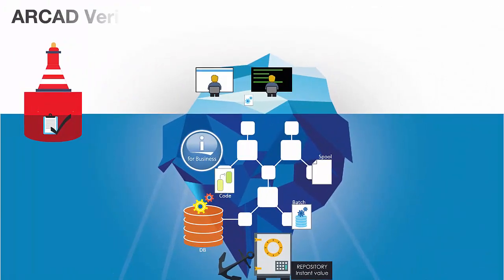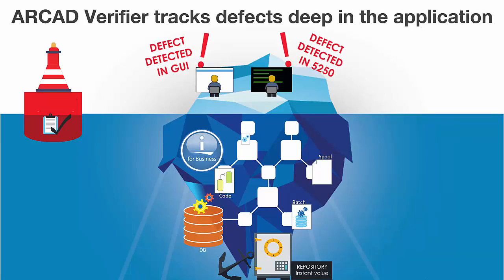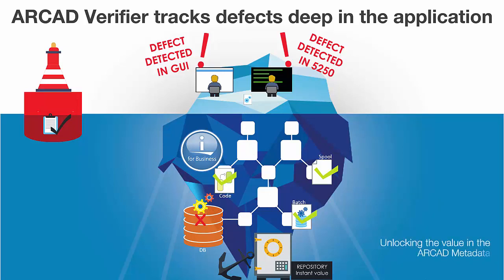Verifier detects errors at their root cause — in the source code, spool files, and deep down in the database. These defects are isolated and their effect is immediately understood. The database can be anonymized and redeployed into its correct state. Unit tests at program level check that each component works in isolation, and then these can be combined into smoke tests and build verification tests. There's no need for a complete end-to-end test anymore, and that means less test cycles overall.